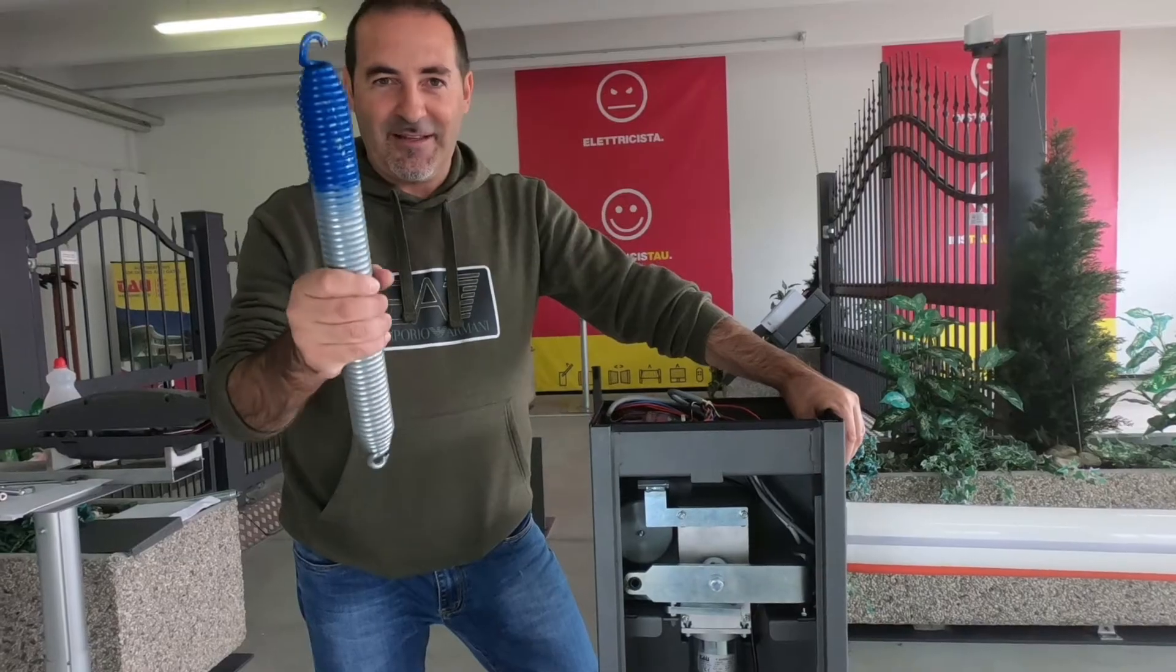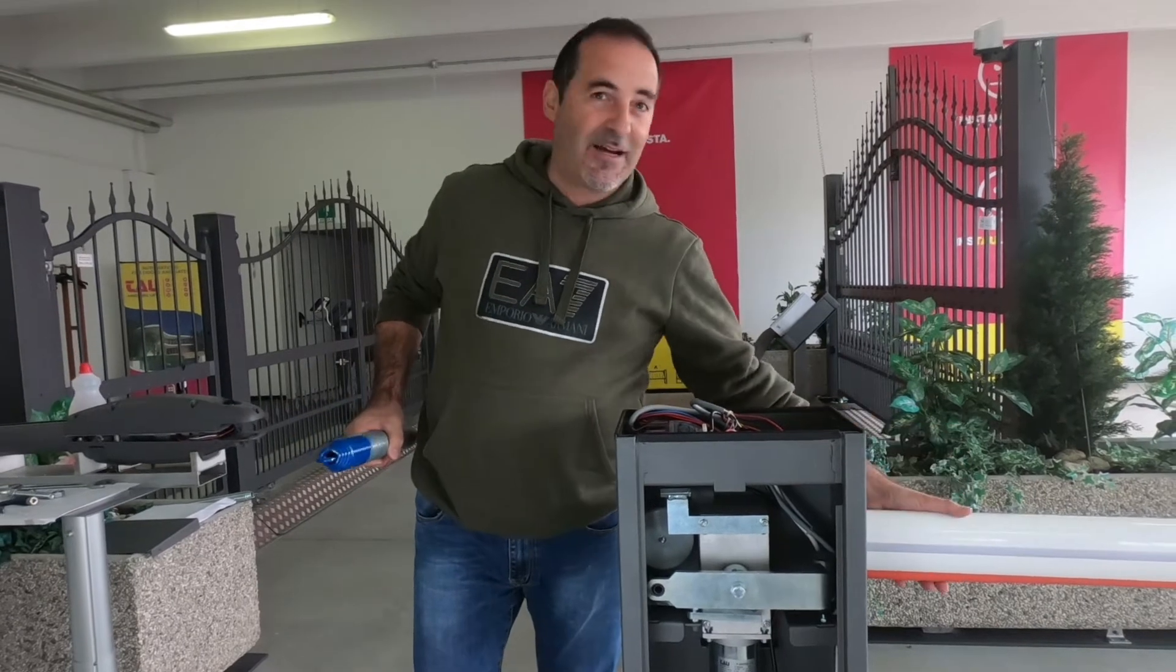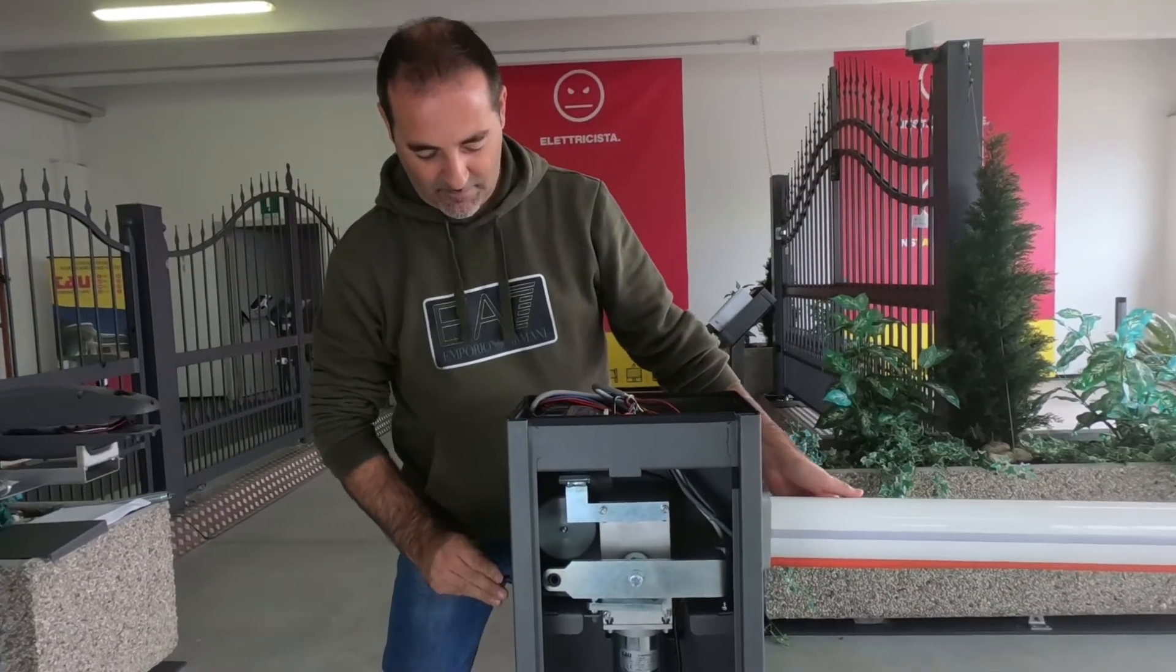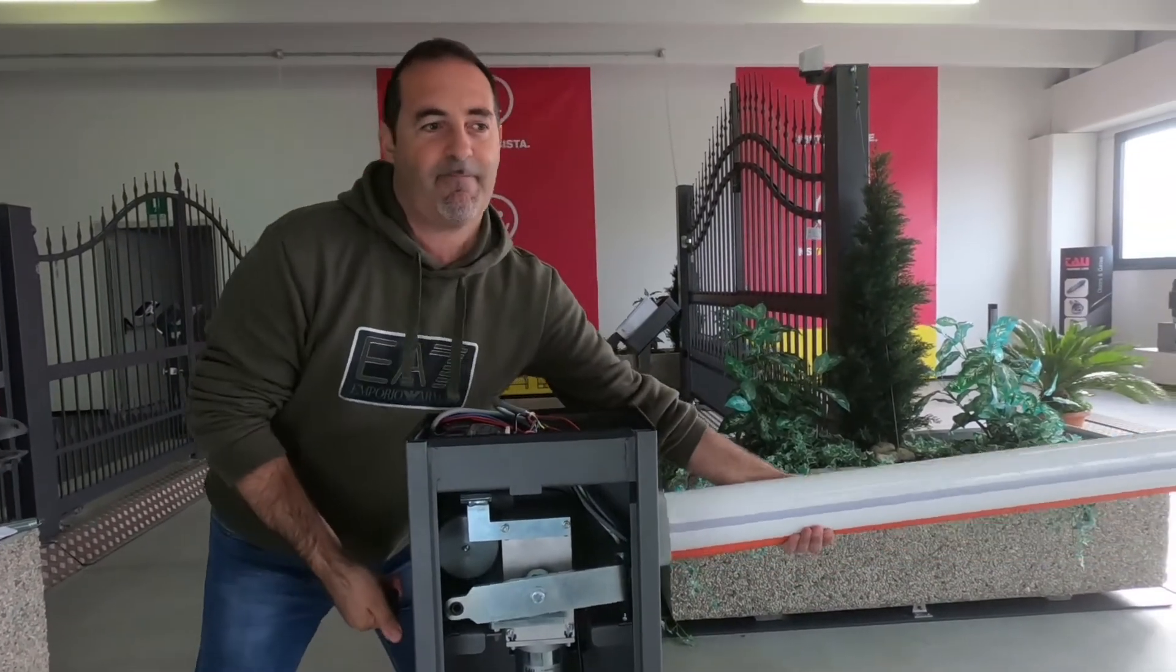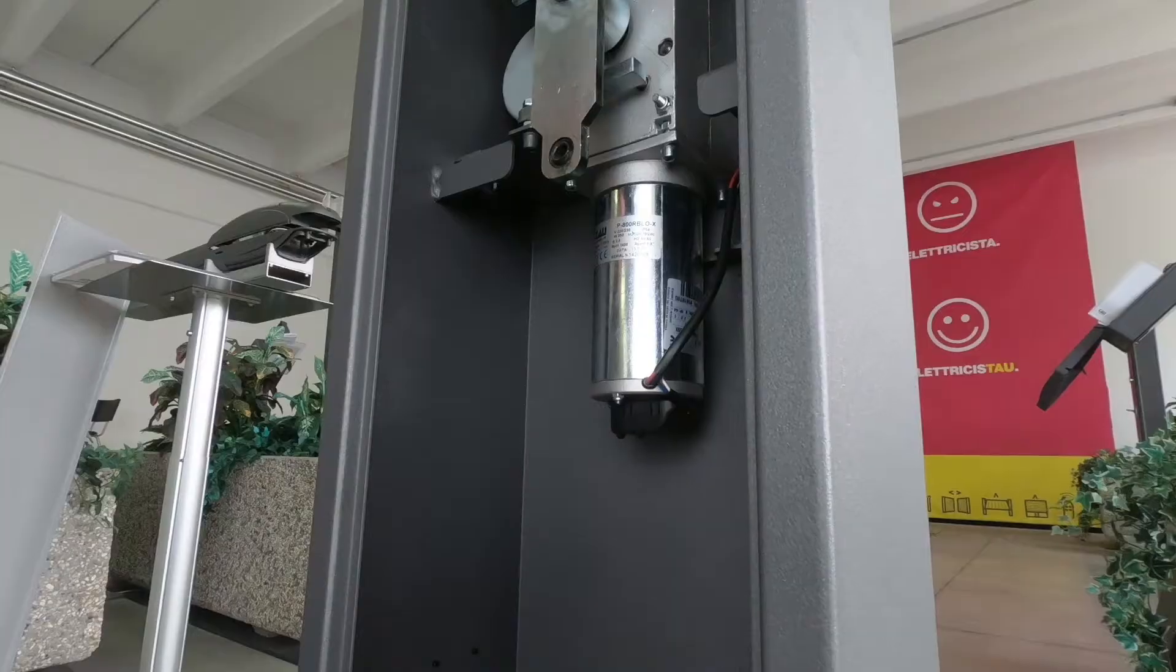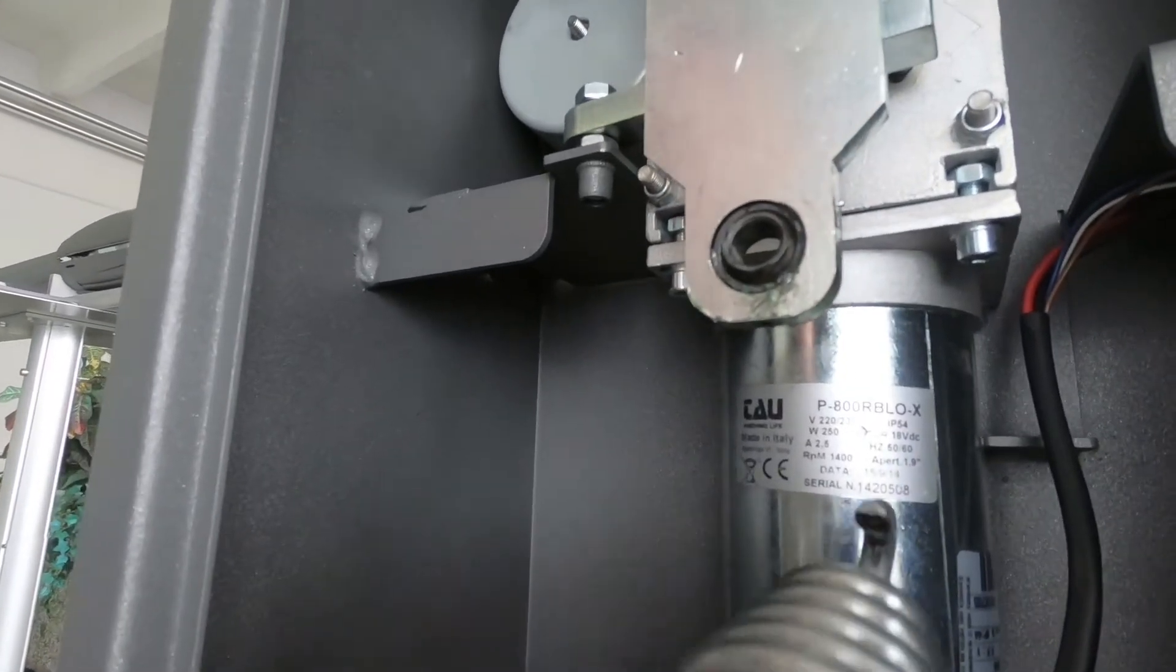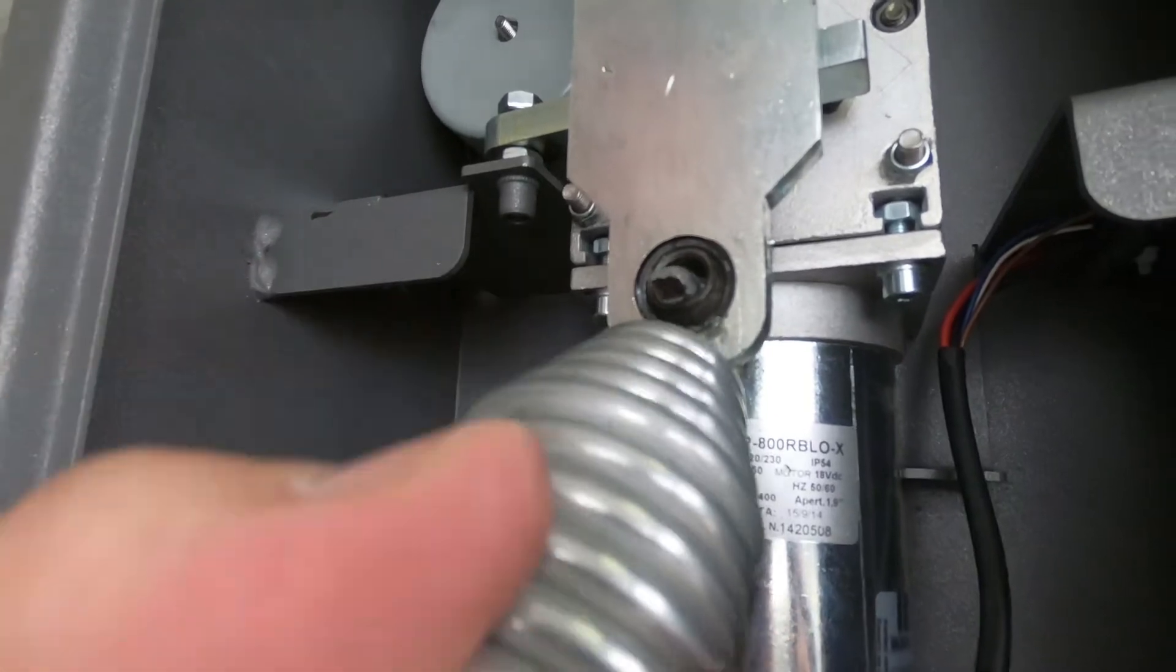We start by placing the boom in a vertical position and locking it with the key release mechanism. In this way we will ensure that the boom does not fall out while we perform the operations. The spring must be positioned inside the cabinet by hooking it on the top of the gear motor.